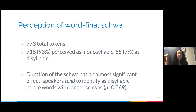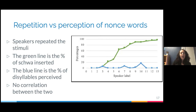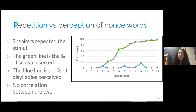I analyzed 773 total tokens. Of these, 93% were perceived as monosyllabic and 7% as disyllabic. The duration of the schwa had an almost significant effect — speakers tended to identify nonce words with longer schwas as disyllabic, but this was not statistically significant. On the graph, the Y axis shows percentages and the X axis shows the speakers. The green line represents the percentage of word-final schwa they produced while repeating the stimuli aloud, and the blue line is the percentage of syllables they identified. One would assume these two lines would behave similarly, but they do not.